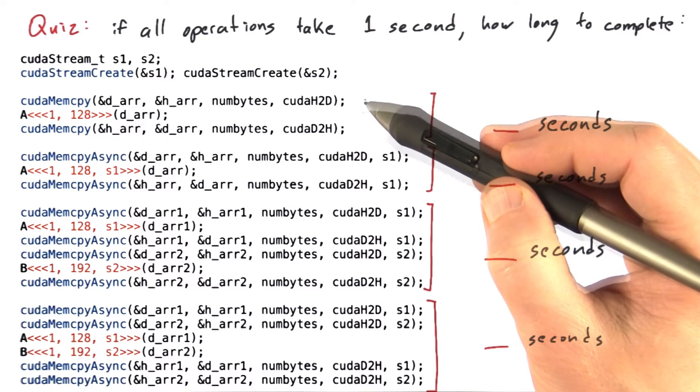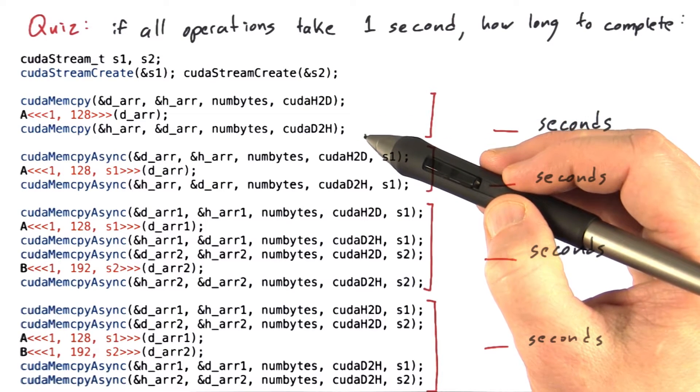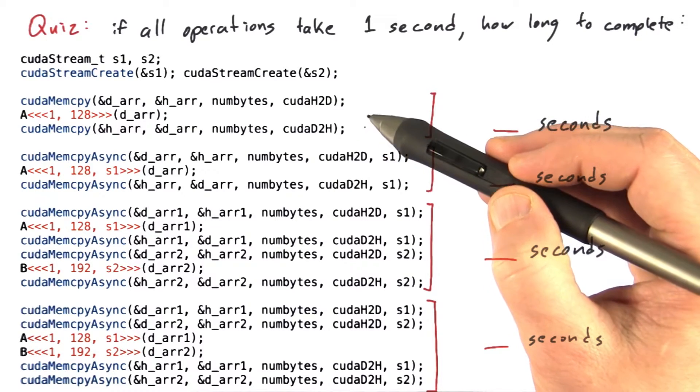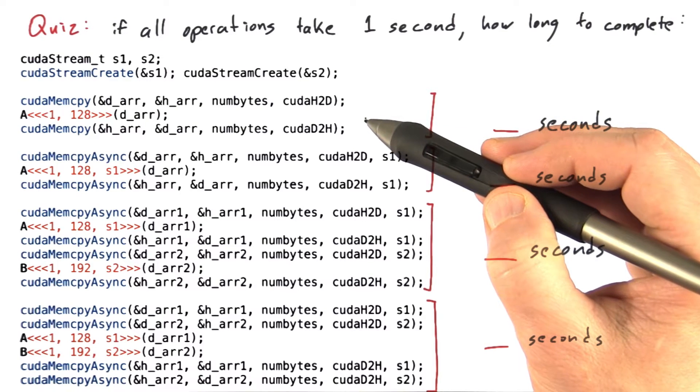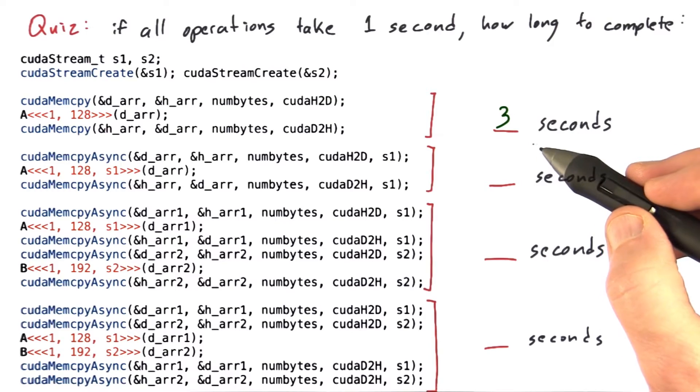So cudaMemcpy will run for one second, kernel A will launch and run for one second, and cudaMemcpy will run for another second. We'll copy the memory down, do some operation on it, copy the memory back up. After three seconds, the results will be ready for the host.